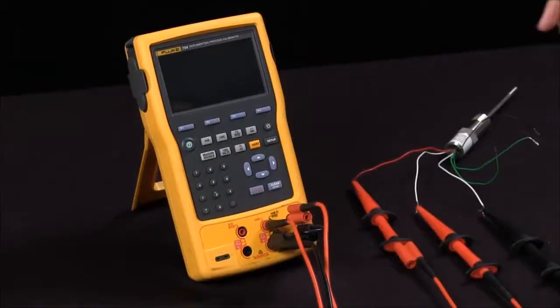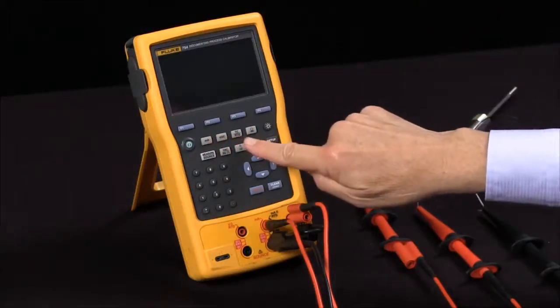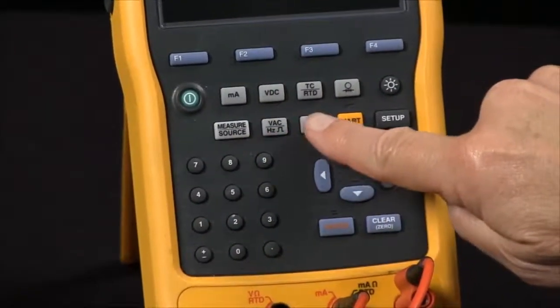The Fluke 754 documenting process calibrator can source and measure a wide variety of parameters: milliamps, DC volts, thermocouples, RTDs, pressure, volts AC, frequency, ohms, and continuity.